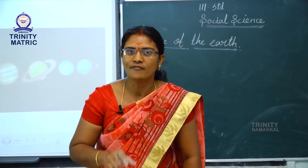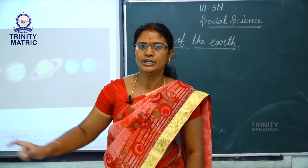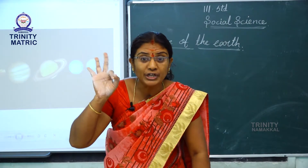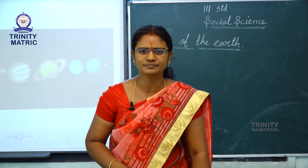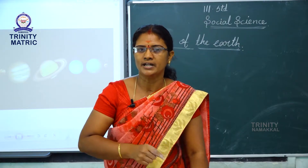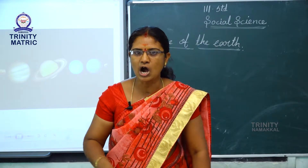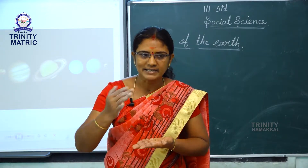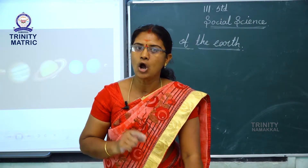About five hundred years ago, Ferdinand Magellan started from Spain on a long journey. He kept on sailing in one direction. After three years, he reached the same place from where he started. This proved that the earth is round. But it is slightly flattened on the top and bottom, like an orange.